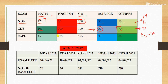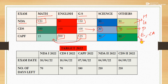Coming to CAPF, there is a paper of English worth 200 marks and a GS paper of 125 questions. In those 125 questions, approximately 15 are from Maths, 30 from Science, and 80 from other topics. You must be seeing that I have colored these in the same color but in different shapes — the same color denotes that the syllabus is the same.